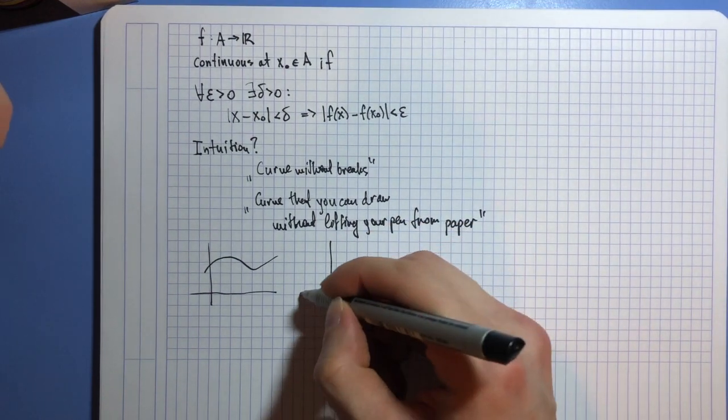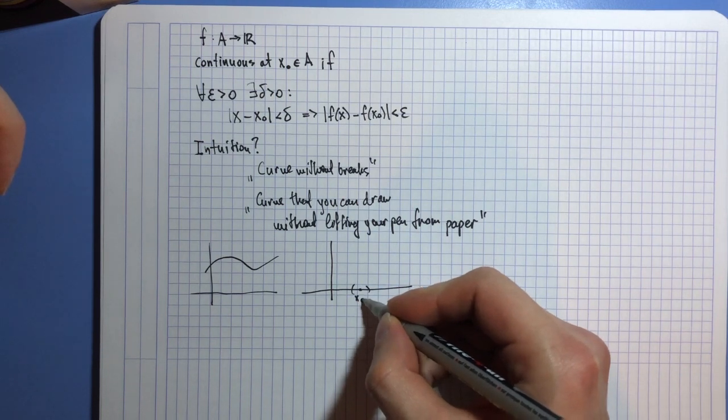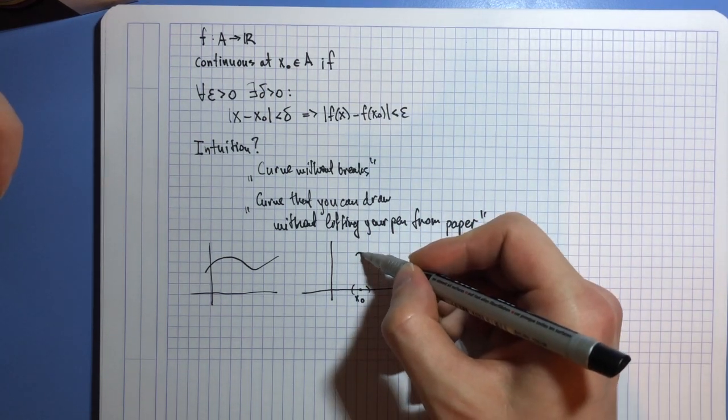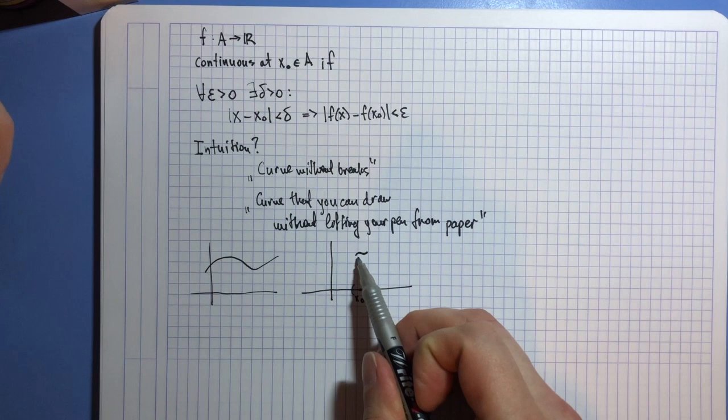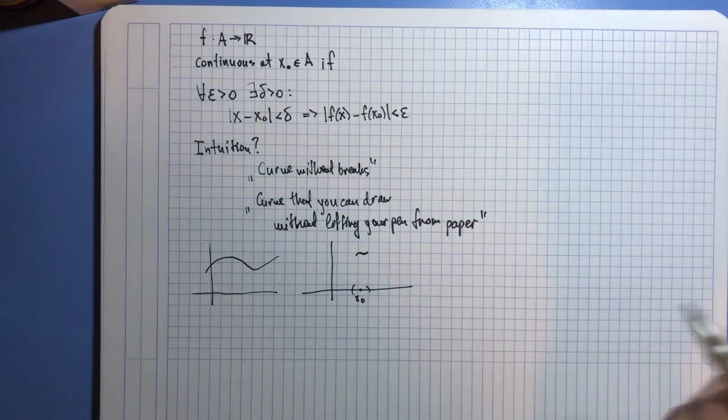But even if we know that it's continuous at one point, it is still reasonable to assume that locally, around our point x₀, it should look something like this. There should be a portion of a graph that looks like a line with no breaks.